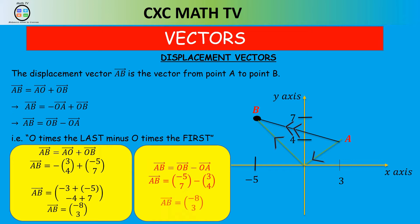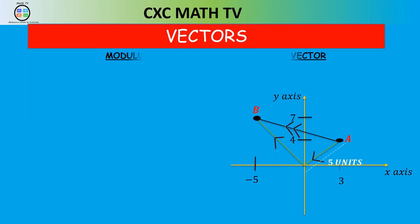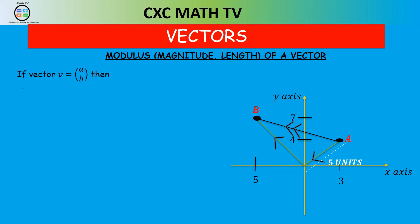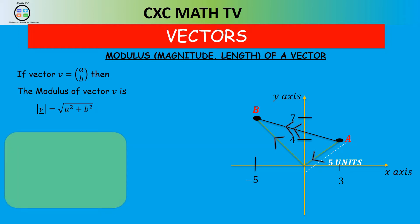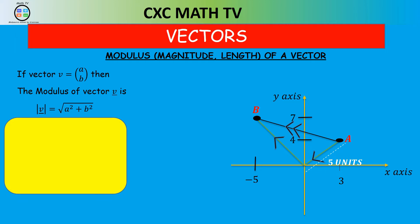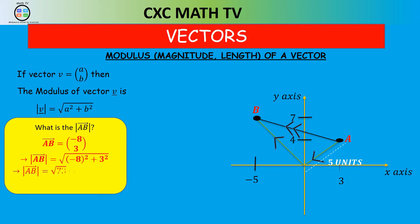The next thing is the modulus or magnitude of a vector. If we're given a vector v = (a, b), then the modulus of v is the square root of a² + b². We're squaring the x-component, adding the squared y-component, then square-rooting. The magnitude of vector AB = √(8² + 3²) = √(64 + 9) = √73 = 8.54 units.